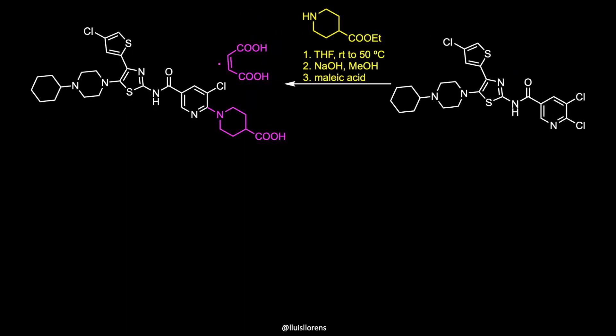A second nucleophilic aromatic substitution with the piperidine, followed by hydrolysis and salt formation using maleic acid, gives Avatrombopag maleate in 85% yield.